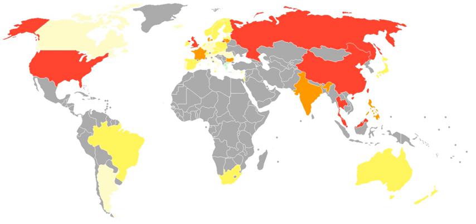Warren and Brandeis write that privacy rights should protect both businesses and private individuals. They describe rights in trade secrets and unpublished literary materials, regardless whether those rights are invaded intentionally or unintentionally, and without regard to any value they may have. For private individuals, they try to define how to protect thoughts, sentiments, and emotions, expressed through the medium of writing or of the arts.